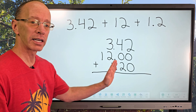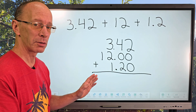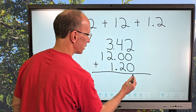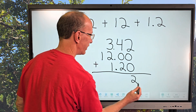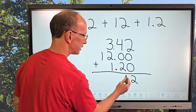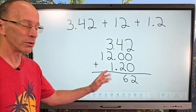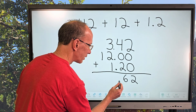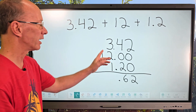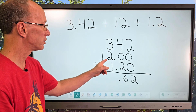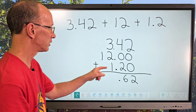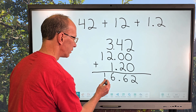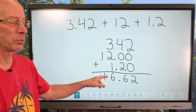Just like when we're adding a three-digit number, we always start on the right side. So I have 2 plus nothing — just drop the 2 down. Then 4 plus 2 is 6. Don't forget, we need to put a decimal point — just line it up. These are the ones: 3 plus 2 plus 1 equals 6. And then we drop that 1 down. So there's our answer: 16.62.